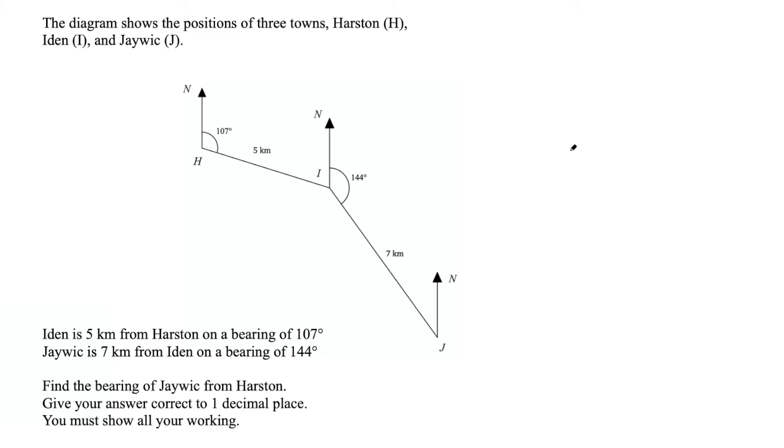Here we have a bearings question involving some problem solving. The question says the diagram shows the positions of three towns: Harston, Iden, and Jaywick. Iden is five kilometers from Harston on a bearing of 107 degrees. Jaywick is seven kilometers from Iden on a bearing of 144 degrees. Find the bearing of Jaywick from Harston. Give your answer correct to one decimal place. You must show all your working.